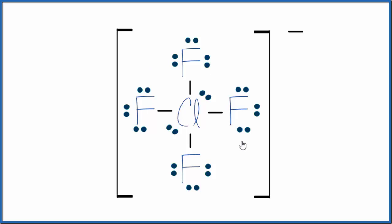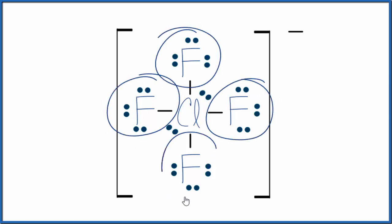If you need help drawing the Lewis structure there's a link in the description. If we look at this we can see each fluorine atom has eight valence electrons and that central chlorine atom has more than eight, but that's okay - it can have an expanded octet.